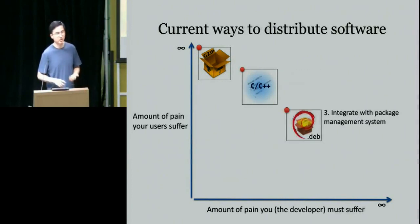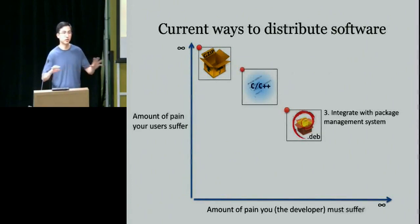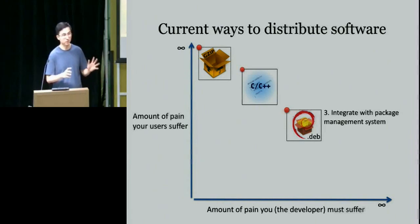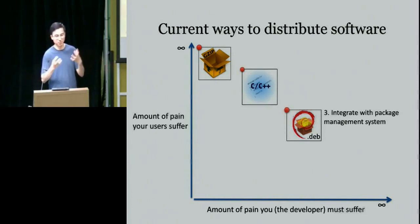You can also integrate with the package management system of your favorite distribution, whether Debian, Red Hat, or others. This requires more work because you have to structure your software and dependencies around what's already in the package management ecosystem. But if done properly, users can just do a sudo apt-get install. It works pretty well — until one version of one library is not in the package manager, and then you're back to the source distribution.